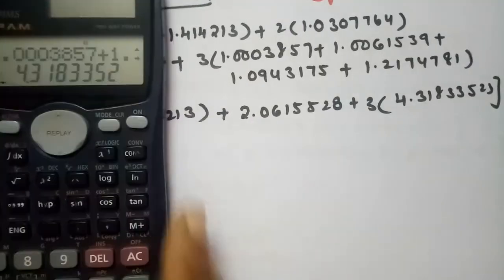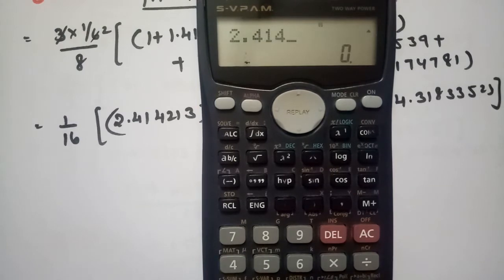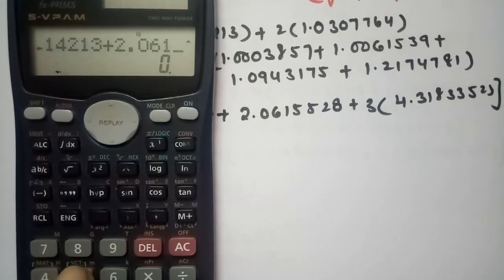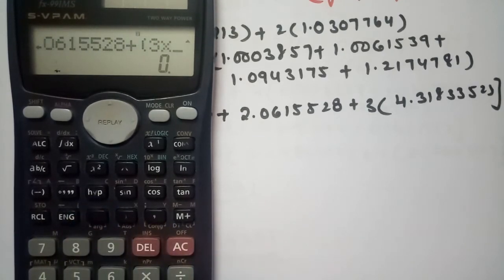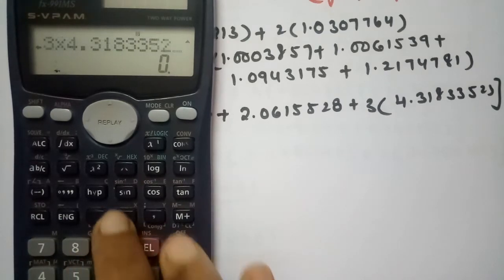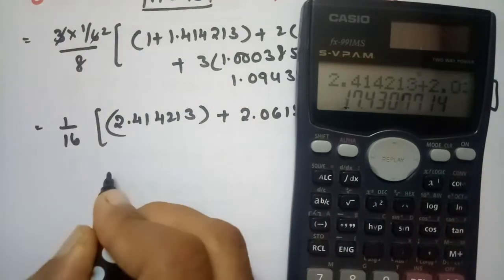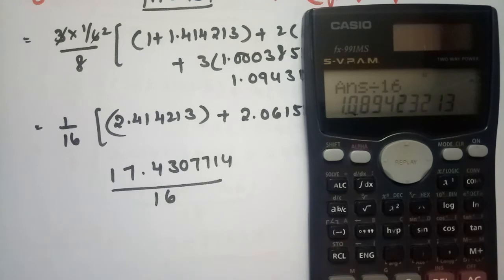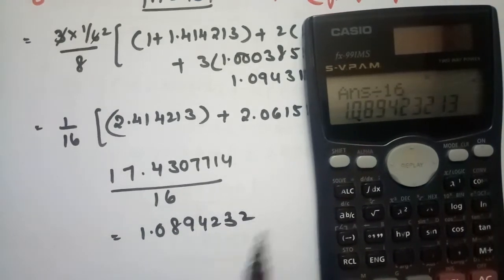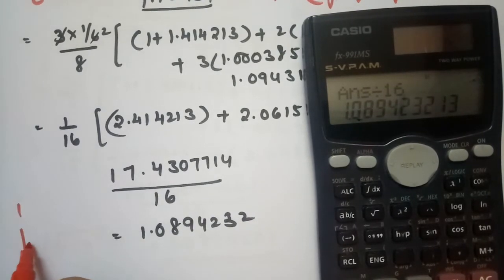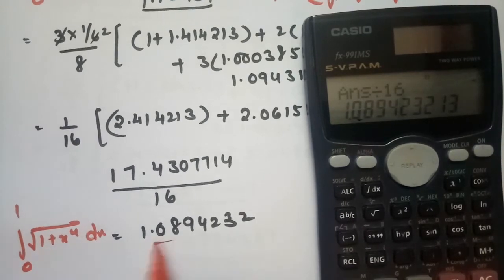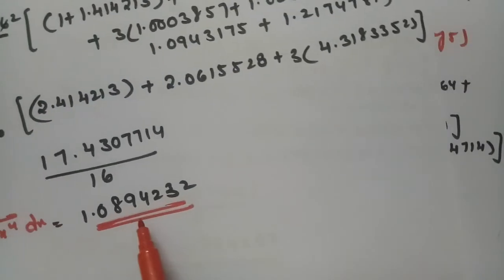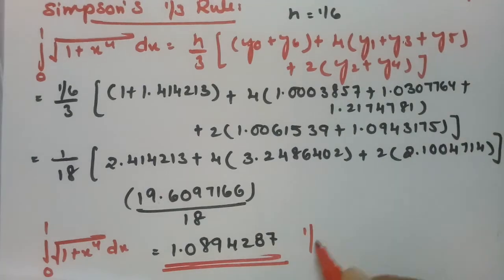Computing: 2.414213 + 2.0615528 + 12.9550056 = 17.4307714. Dividing by 16 gives 1.0894232. So the value of ∫₀¹ √(1+x⁴) dx according to Simpson's 3/8 rule is 1.0894232. According to Simpson's 1/3 rule the value is 1.0894287, and both results are in close agreement at approximately 1.089.